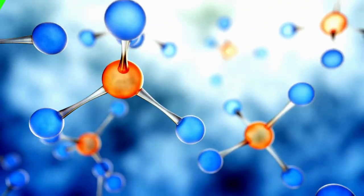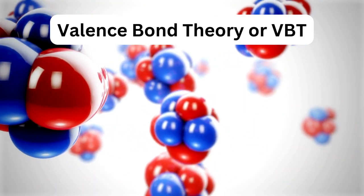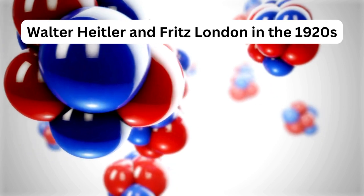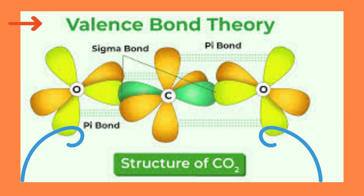One of the primary theories explaining covalent bonding is called the valence bond theory or VBT. It was proposed by Walter Heitler and Fritz London in the 1920s. According to VBT, covalent bonds form when atomic orbitals on different atoms overlap.